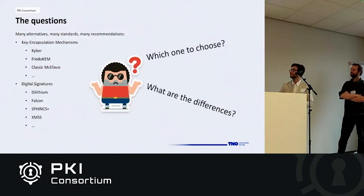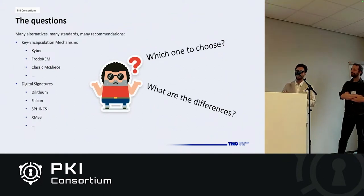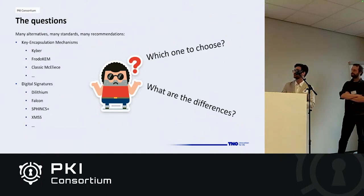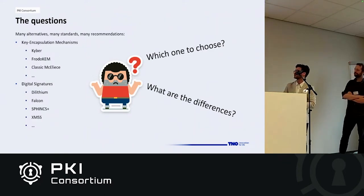Now we have a lot of algorithms. For key encapsulation, there is Kyber, FrodoKEM, Classic McEliece, HQC, and BIKE, which are under review. For digital signatures, there is Dilithium, Falcon, SPHINCS+, XMSS, LMS, and many other standardized schemes.